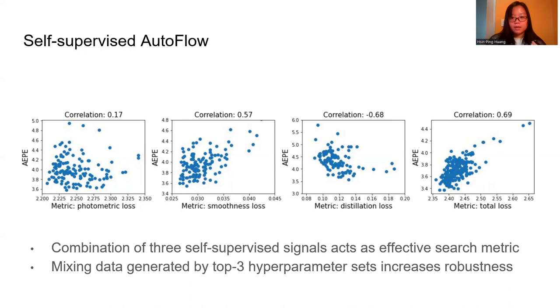For example, a hyperparameter search guided by the distillation loss alone converges to models with very high ground truth error but low distillation loss.